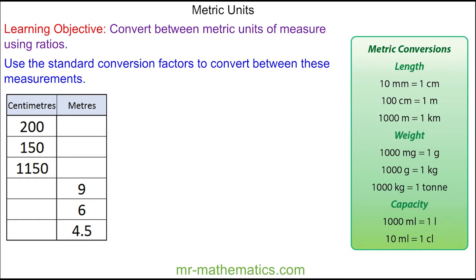Welcome to our lesson on converting between metric units. We're going to begin by converting between centimetres and metres, which we can do using this conversion factor here. And we can write this as a ratio. So 100 centimetres is the same as 1 metre.